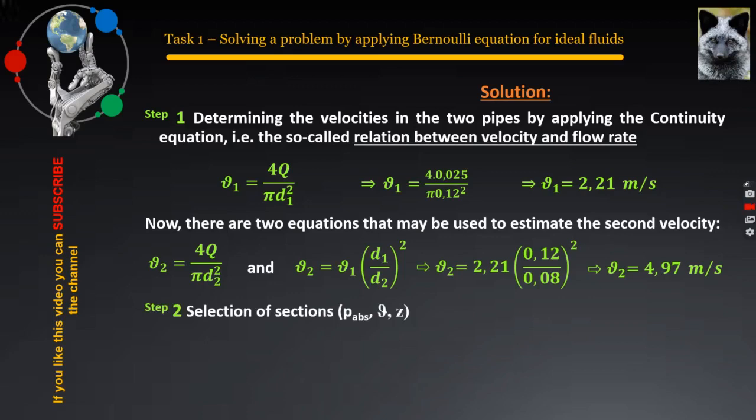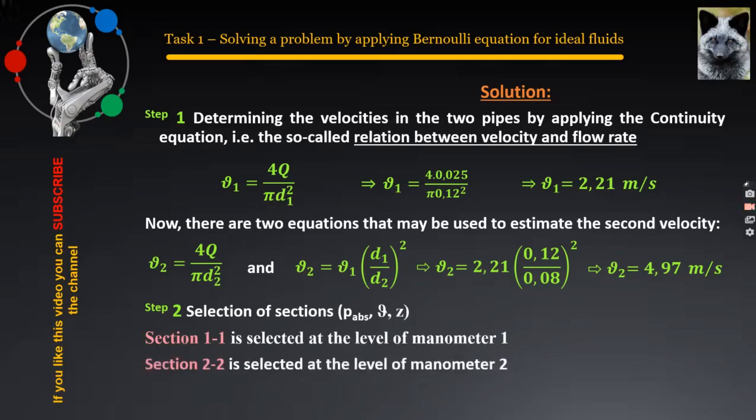Step two is to select the sections for which the Bernoulli equation can be further applied. If you have any doubts about where exactly to select the sections, please note that it is sufficient to follow both ends of the height h, which automatically indicates to the places where they are selected. In this case, section 1.1 is selected at the level at which the first manometer is installed, while section 2.2 is selected at the level at which the second manometer is installed. Please do not forget to indicate on the diagram the places where you have selected the two sections.